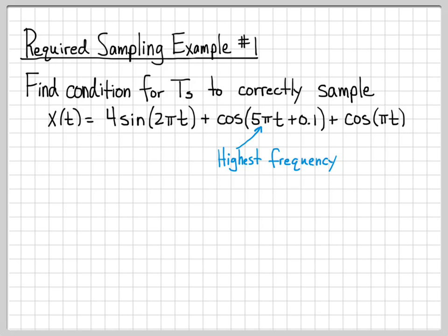This problem is actually a little simple. Normally given a continuous time x(t), we would need to compute the Fourier transform to identify which frequency components are present in the signal. However, since this problem is actually written as a sum of sinusoids, we can just look at each term and know the frequency. This first term for sine has an omega of 2π. The second term has an omega of 5π, and this last term has an omega of π. So it's very easy to see which of these terms has the largest frequency, and it's this term right here in the middle, the cosine term.